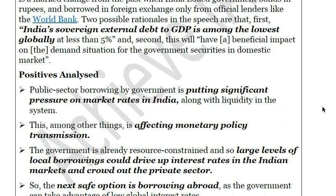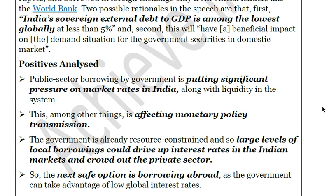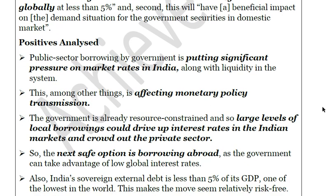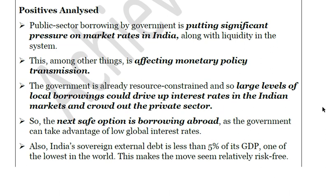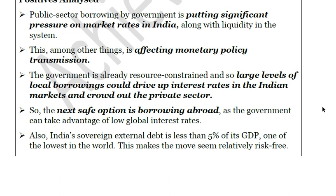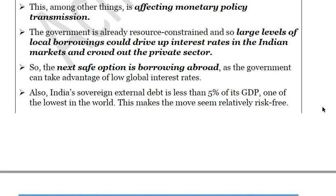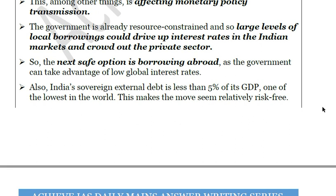This public government borrowing creates significant pressure on market rates — market rates are pushed high because liquidity reduces. This also affects monetary policy. For example, if the RBI is favoring a cheap monetary policy, excessive government borrowing will not result in much transformation at the ground level. So there are large levels of local borrowings which drive up interest rates and crowd out the private sector. The safer option is borrowing abroad.